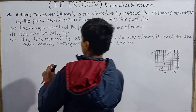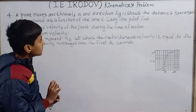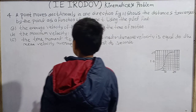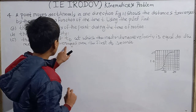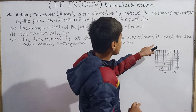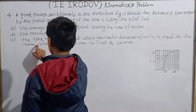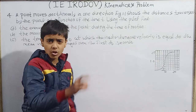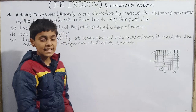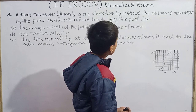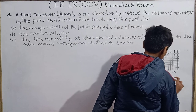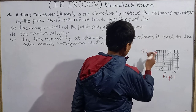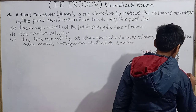Question 4: A point moves rectilinearly in one direction. Figure 1.1 shows the distance transferred by the point as a function of time t. Using the plot, find: (a) the average velocity of the point during the time of motion; (b) the maximum velocity; (c) the time moment t₀ at which the instantaneous velocity equals the average velocity averaged over the first t₀ seconds. Here a distance-time graph is given, with s in meters and t in seconds.